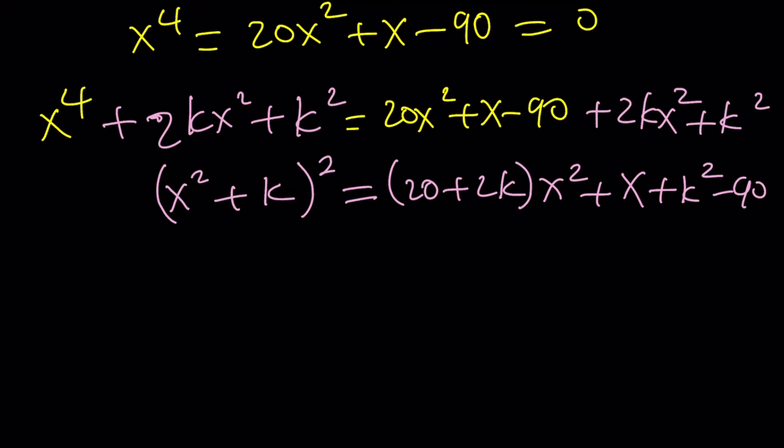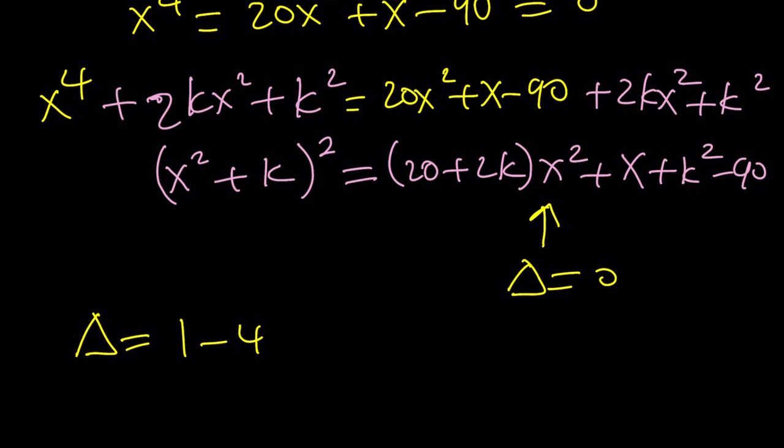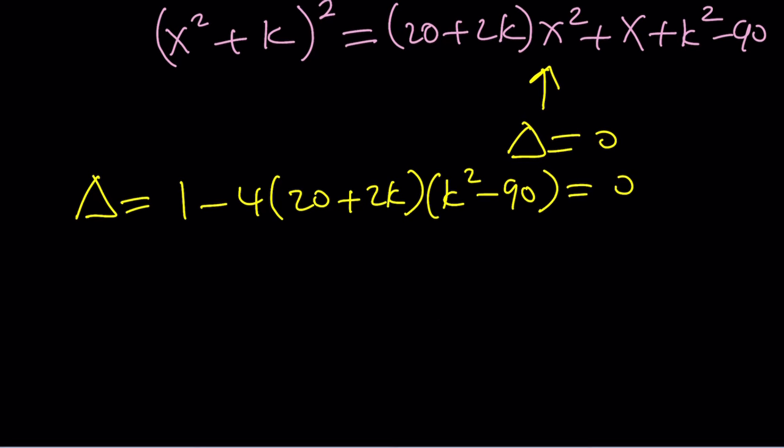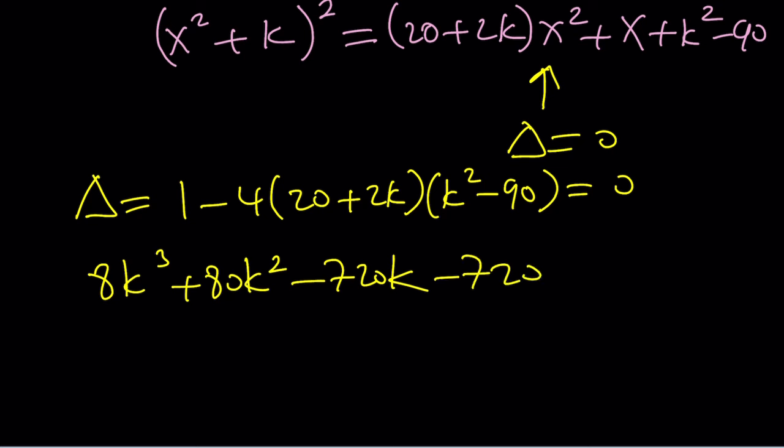The right hand side should also be a perfect square. So the discriminant needs to be 0. Let's solve for k. Not nice.